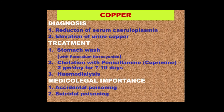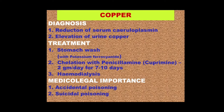For diagnosis, you look at the urine copper level, which is often elevated in Wilson's disease, and if possible the serum ceruloplasmin level, where there is reduction. These are the two main diagnostic points. For treatment, you can do a stomach wash — if possible with potassium ferrocyanide, but even if not available, saline or water will do — only in acute ingestion within two to three hours. Chelation with penicillamine, also called cupramine, is very beneficial. It is specific for copper, easily available in India, given orally at two grams per day for seven to ten days.